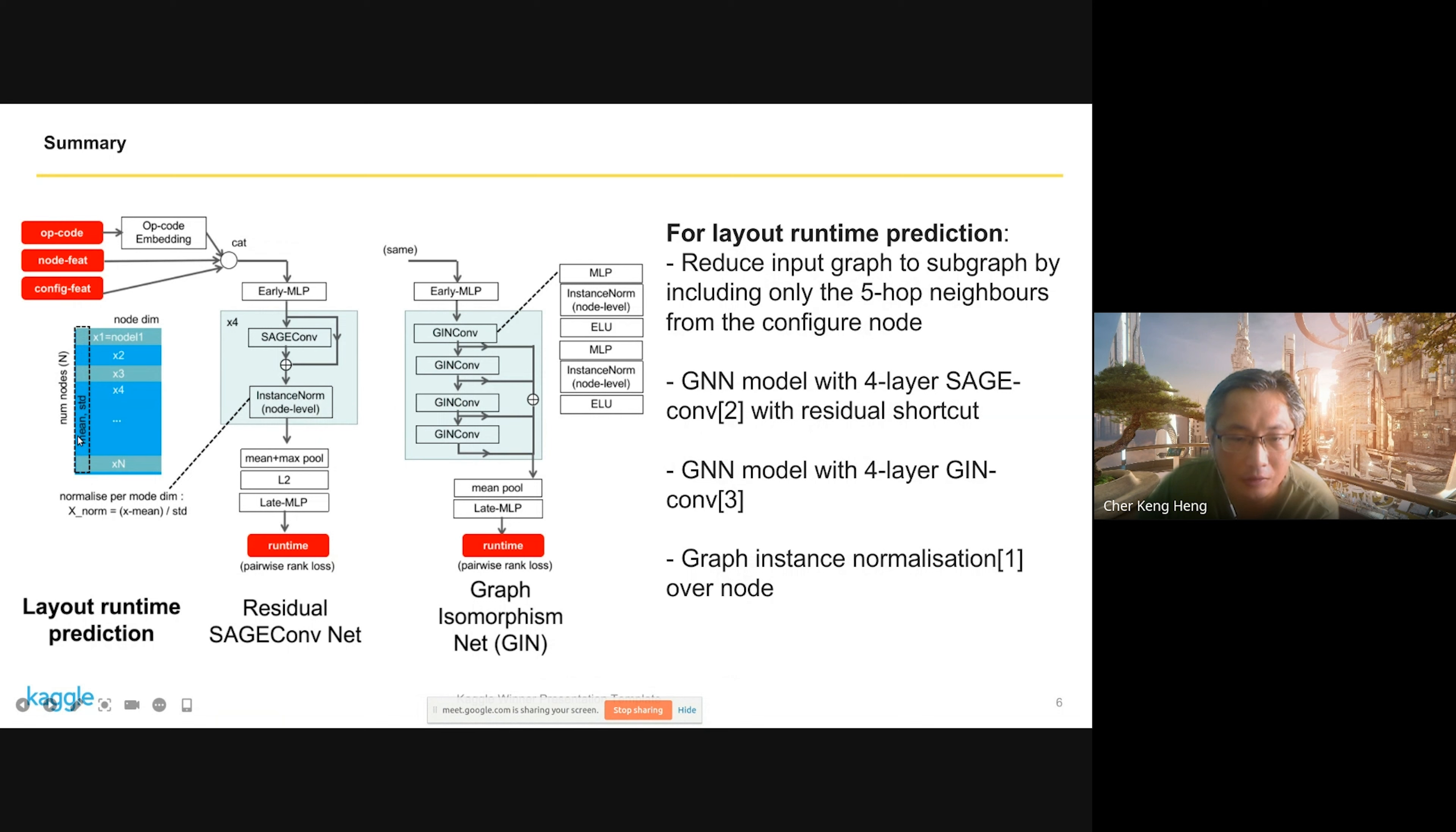I normalize per dimension. The rest is straightforward. For op codes you have an embedding. The node features I normalize by subtracting the mean and standard deviation of all train samples. For the feature configuration, I use as-is concatenation. I have an early MLP.